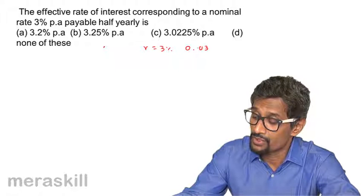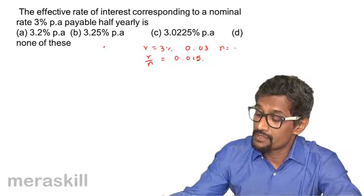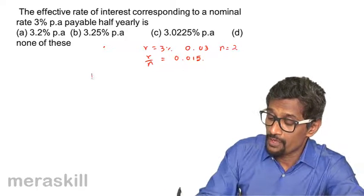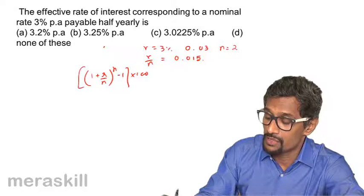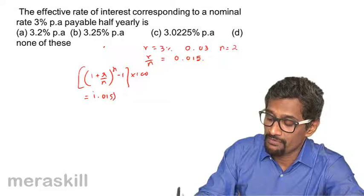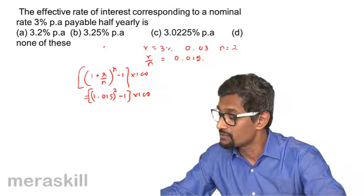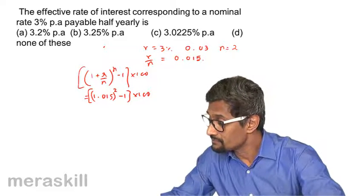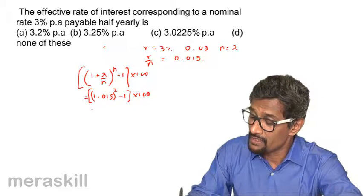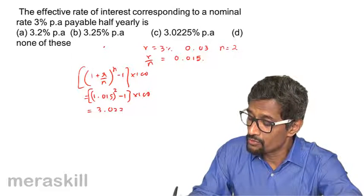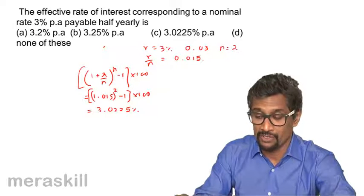So R by N will turn out to be 0.015 and N obviously is half yearly, 2. So it's going to be 1 plus R by N, the whole raised to N, minus 1 into 100, which turns out to be 1.015 raised to 2 minus 1 into 100.